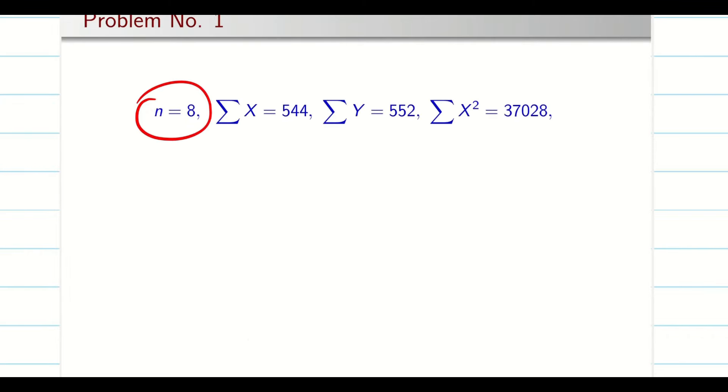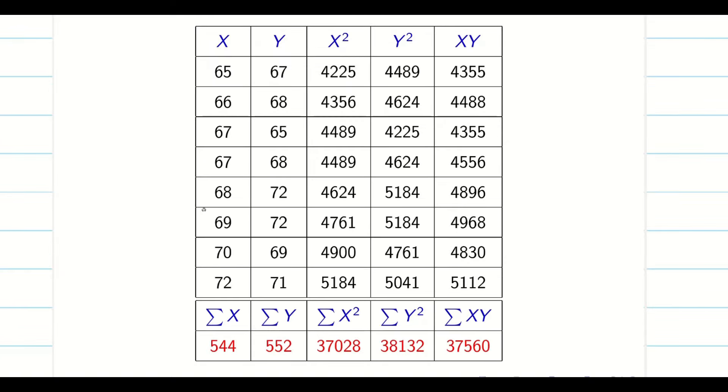Many students would do errors in n. See, whenever I want to count n, either I have to count the variable x or variable y. You should not count both. Here I can see the count of variables in x is 8. So n is 8.